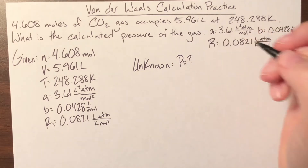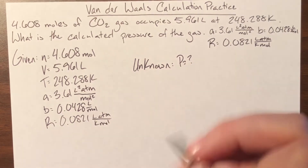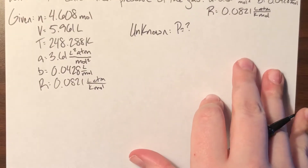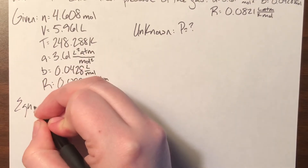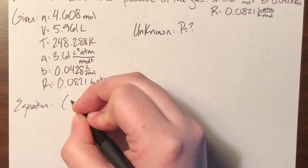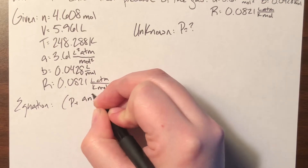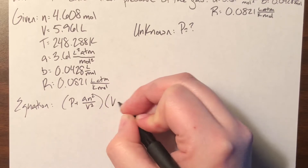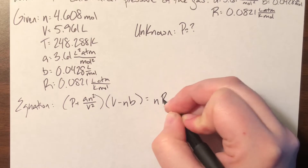Once I have that, I can go ahead and establish my equation. My initial equation is going to be the Van der Waals equation: pressure plus AN squared over V squared, times V minus NB, is equal to nRT.